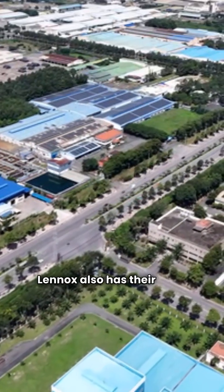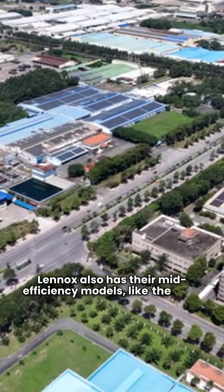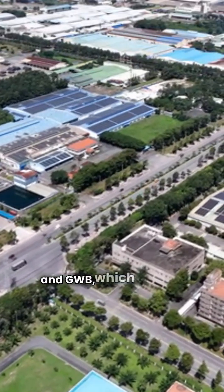Lennox also has their mid-efficiency models, like the GWM and GWB, which are non-condensing with 83% AFUE. The big advantage for all Lennox models is the warranty. They offer a much longer 20-year heat exchanger warranty, but only a one-year parts warranty. They also do not require a dealer.